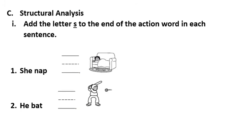Section C. Add the letter S to the end of the action word in each sentence. Sentence number one, she nap. Now we remember, we add S to the subjects she, or he, or it. She nap is not correct. We have to add S. It becomes she naps.